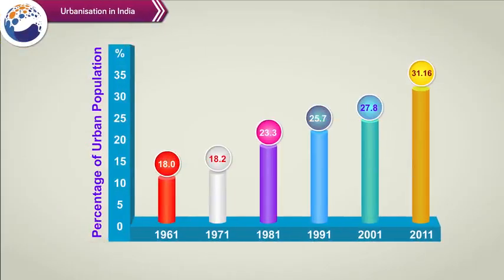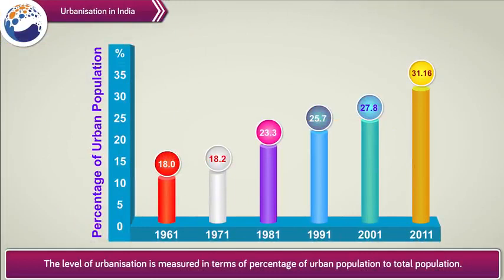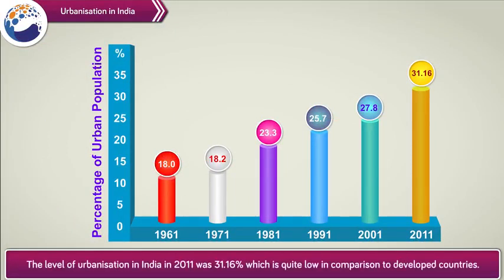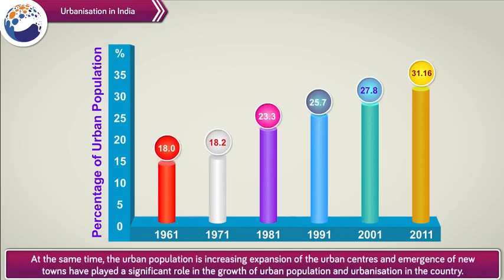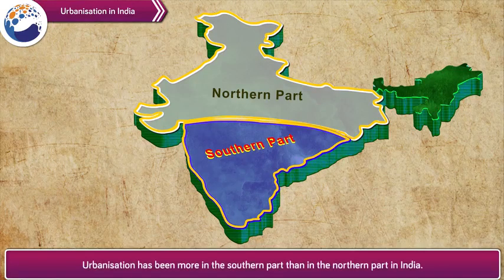Urbanization in India. The level of urbanization is measured in terms of percentage of urban population to total population. The level of urbanization in India in 2011 was 31.16%, which is quite low in comparison to developed countries. At the same time, the urban population is increasing. Expansion of urban centers and emergence of new towns have played a significant role in the growth of urban population and urbanization in the country. Urbanization has been more in the southern part than in the northern part of India.